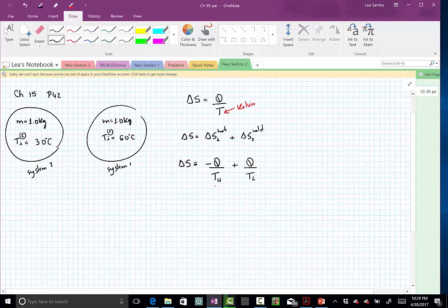Here for the hot one, I cannot put 60, because the temperature, this is 60 degrees, is just the initial. So, and it's changing. For the low one, I cannot put 30, because that's the initial, and the temperature is going to be changing.